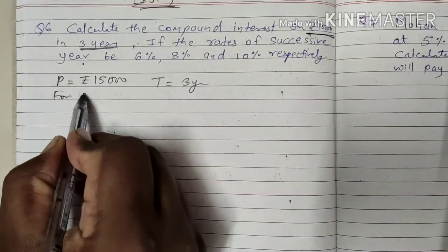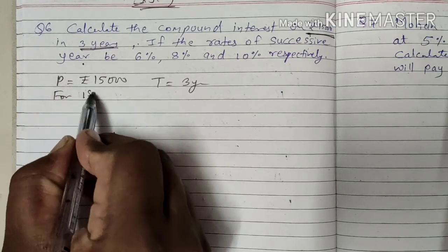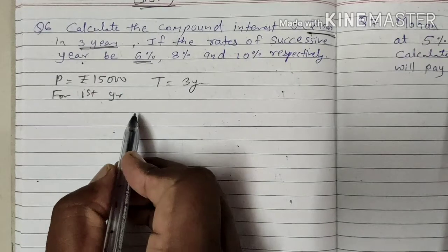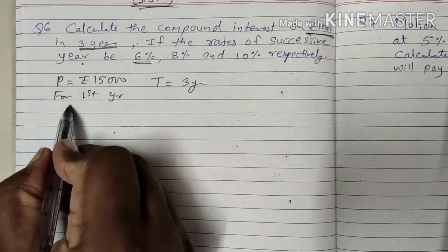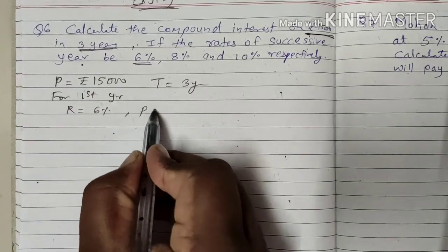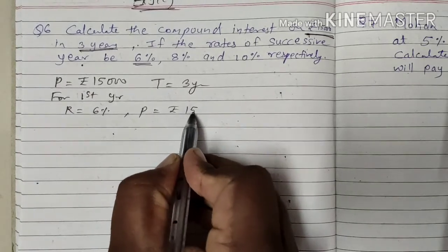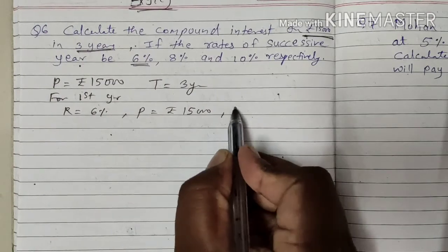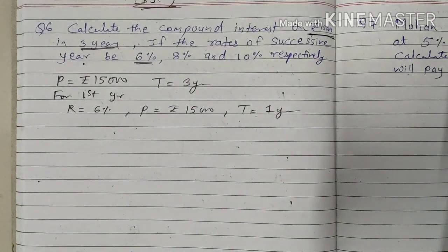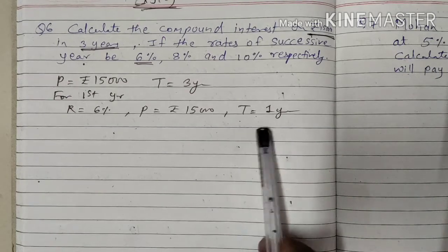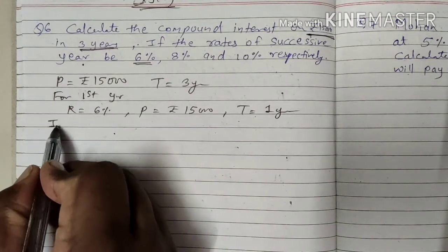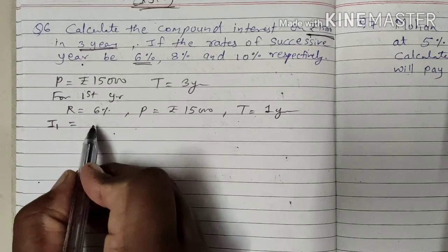Let us start for the first year. For the first year, the rate of interest is 6%. The principal we will take as Rs. 15,000 and the time will be 1 year, because whenever we are solving separately for each year, the time will always be 1 year. Let us find out Interest 1, the interest for the first year.